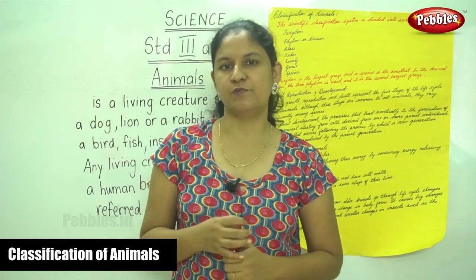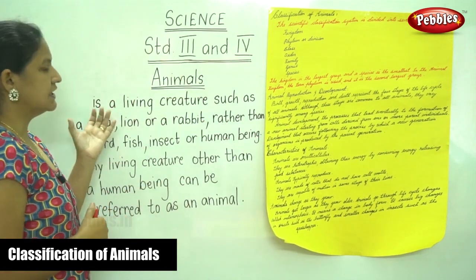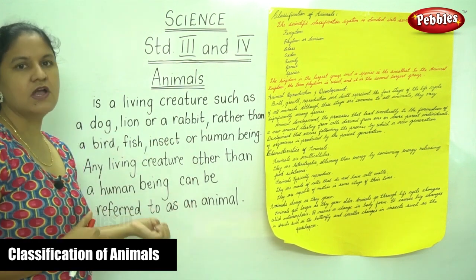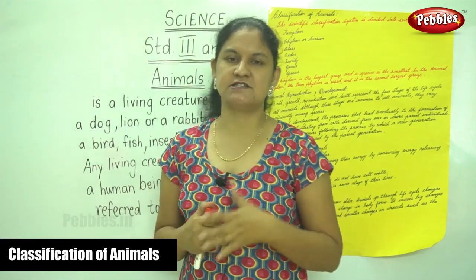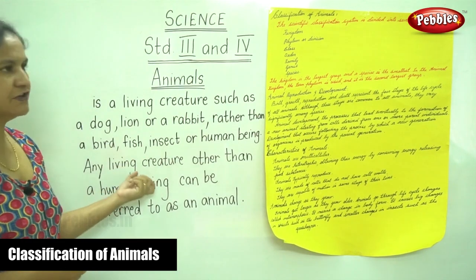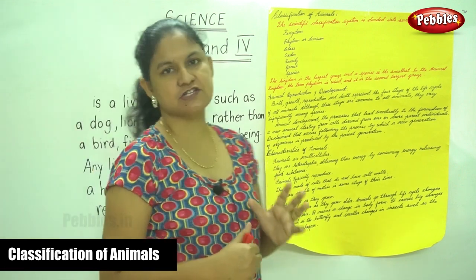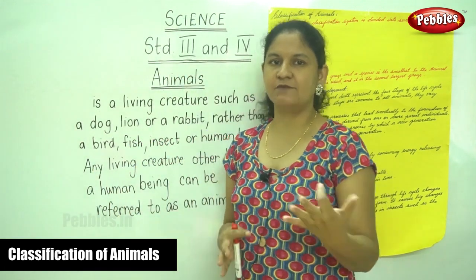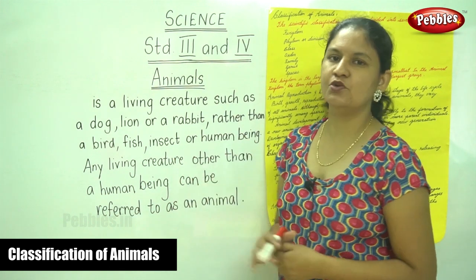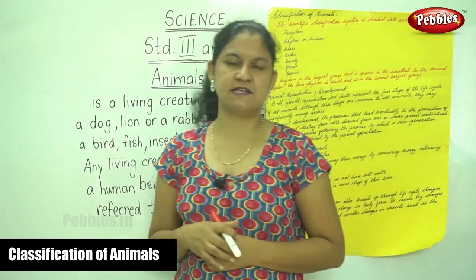Now our topic will be about animals. So let us see what we mean by animals. An animal is a living creature such as a dog, lion, or a rabbit — rather than a bird, a fish, an insect, or a human being.